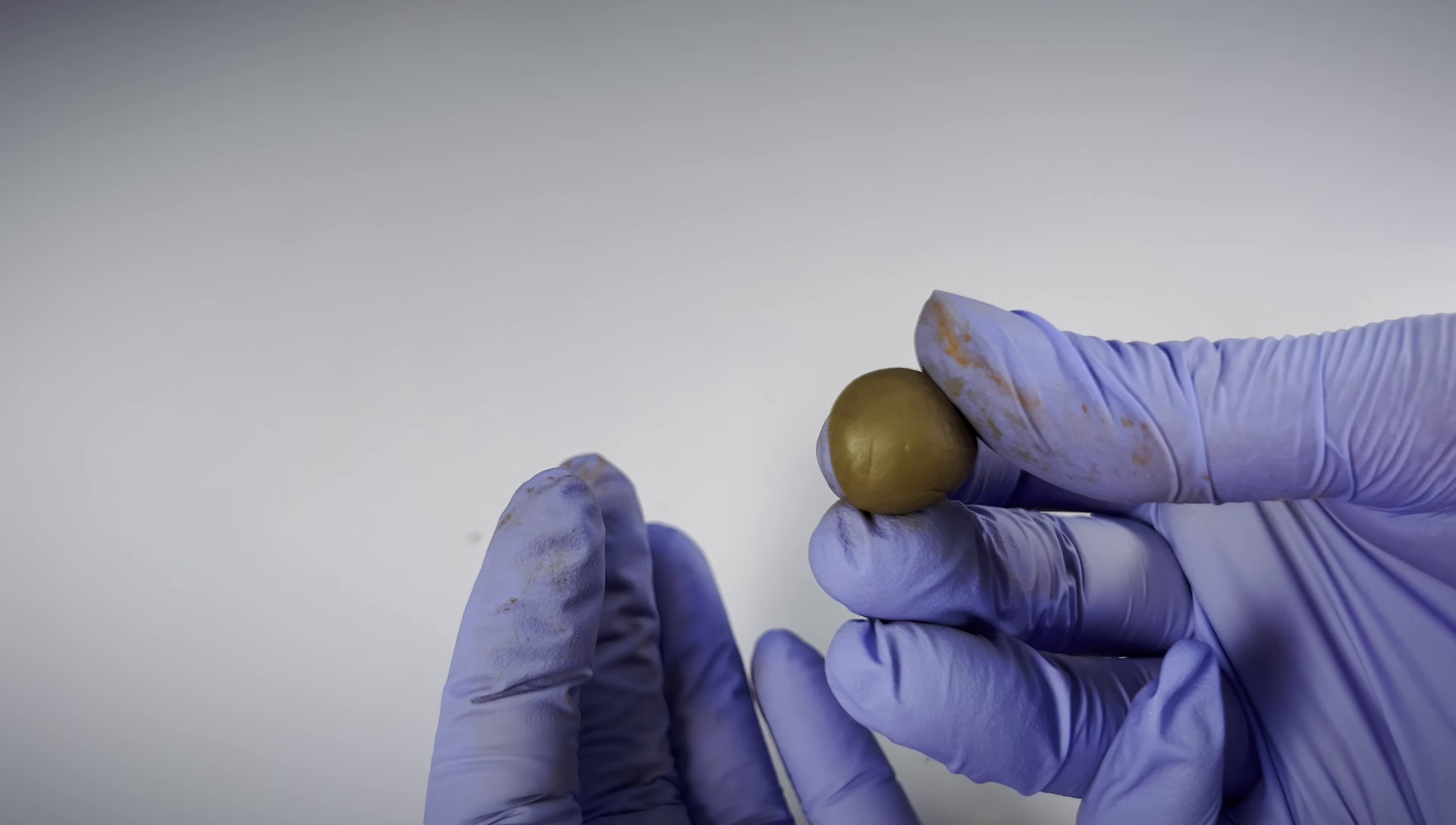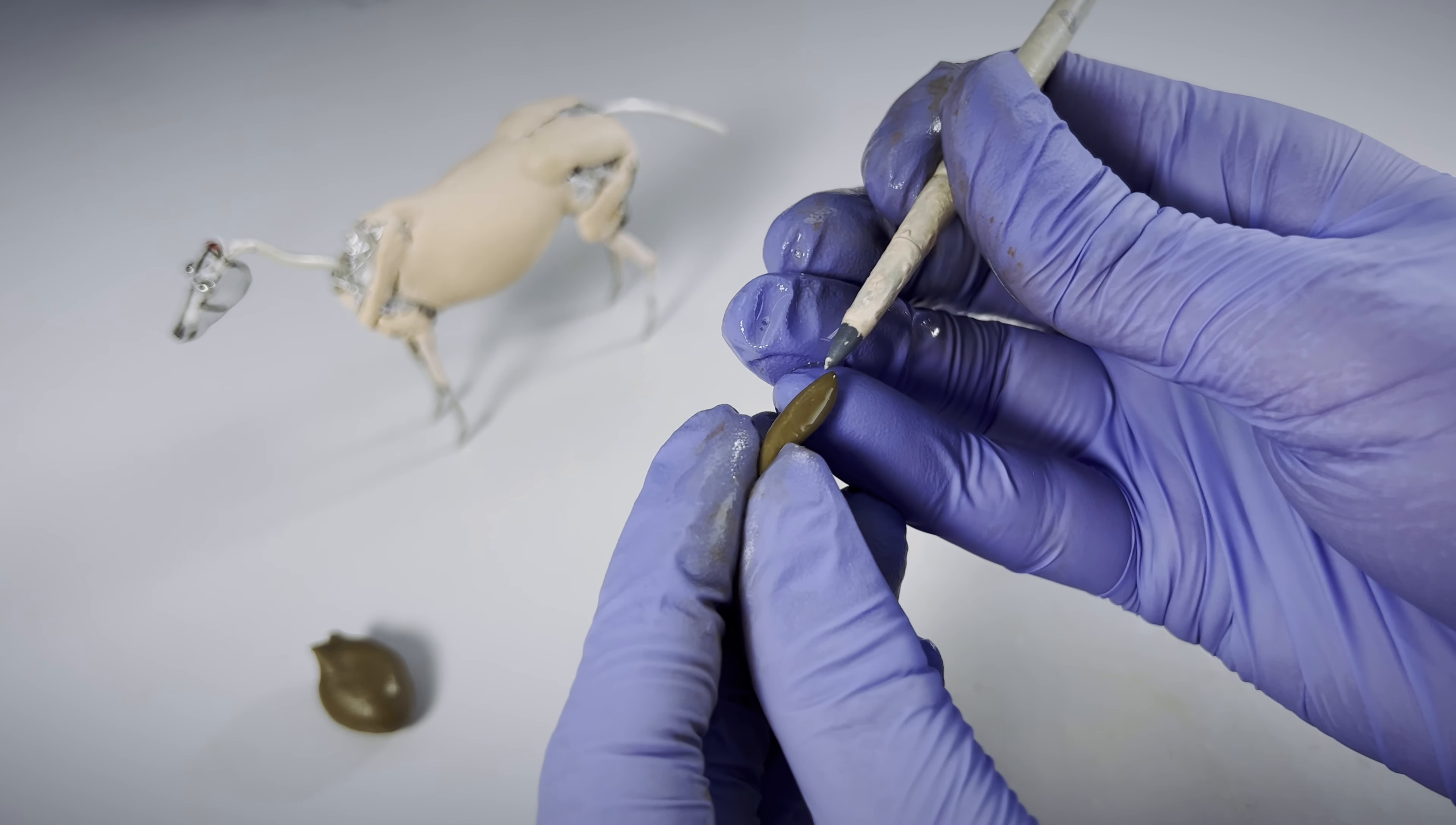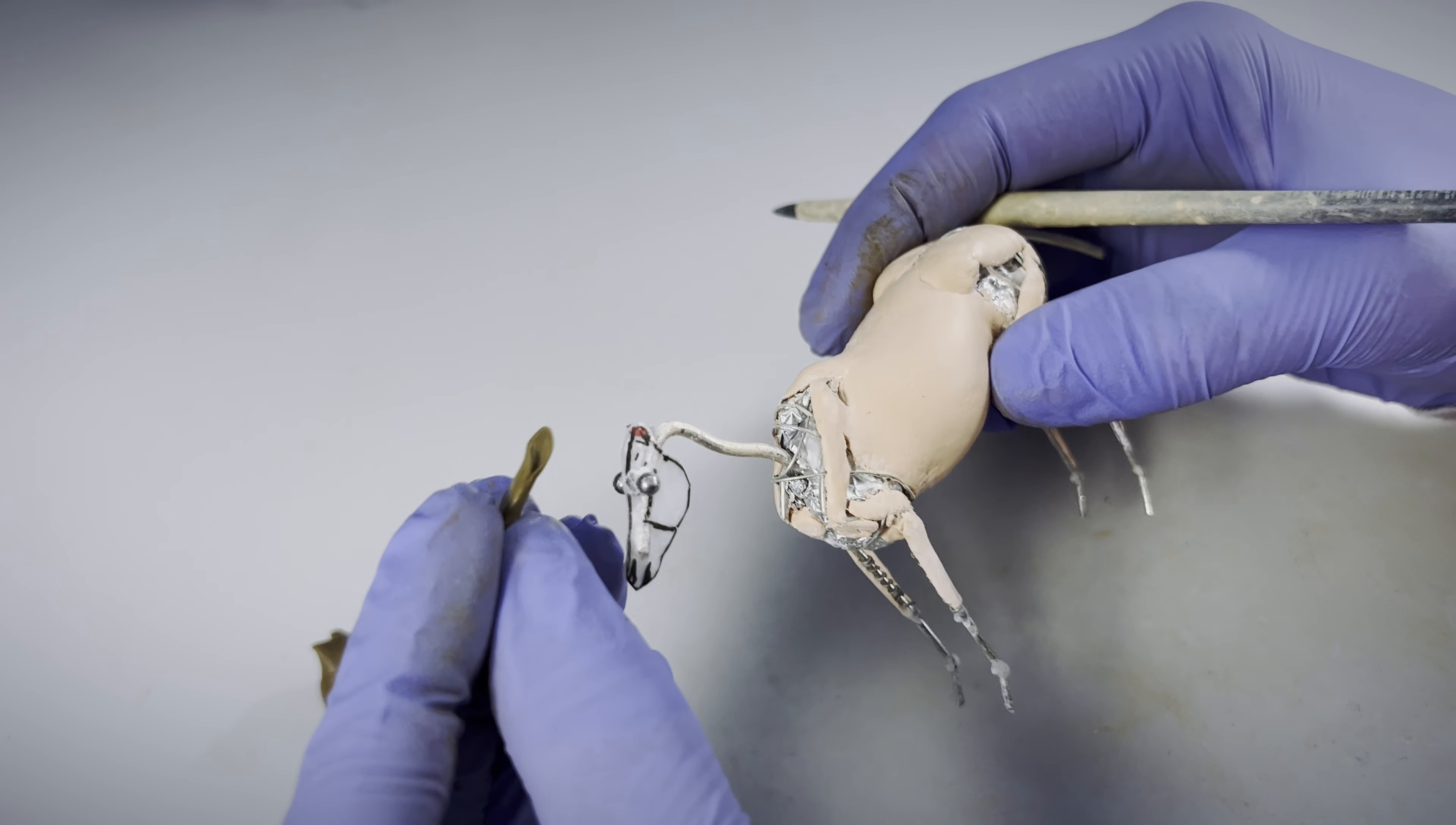I've experimented with mixing equal amounts of Green Stuff to Milliput as well as varying the ratios and found they all worked really well for my sculptures. It just depends on how much rigidity you'd like to retain.